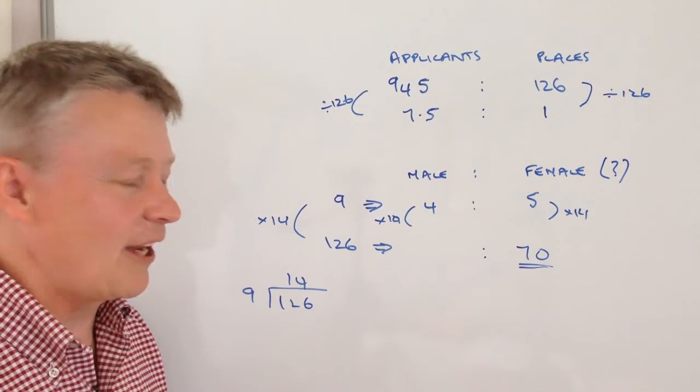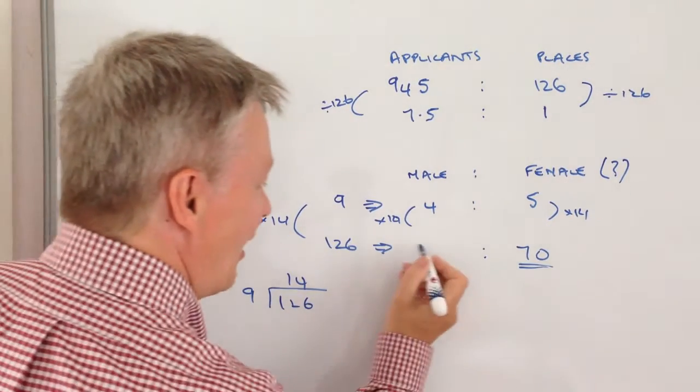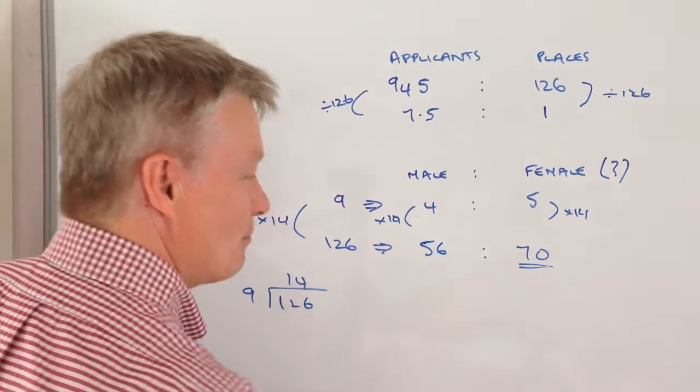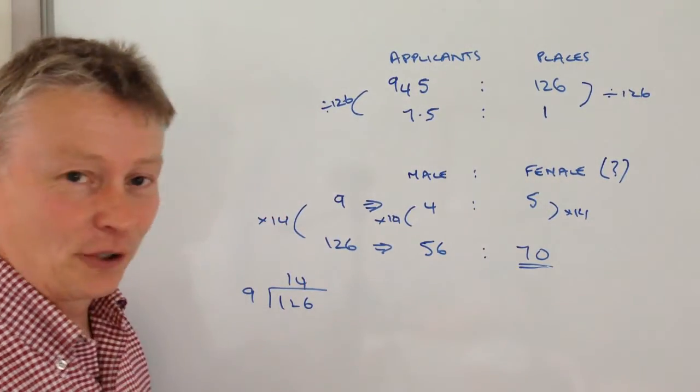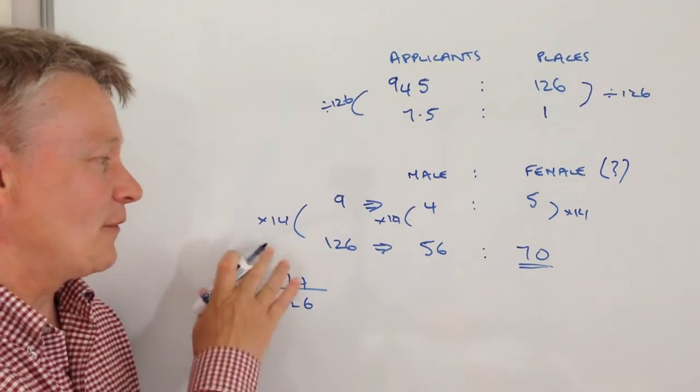You can also work out the number of males there by multiplying 14 by four, and that's going to be about 56. So there's 56 males in that group of 126 successful applicants.